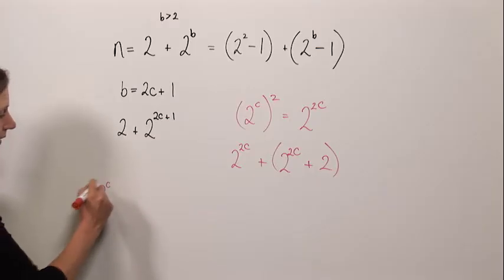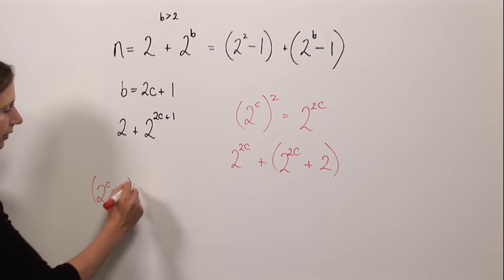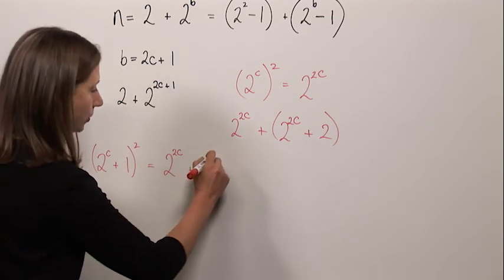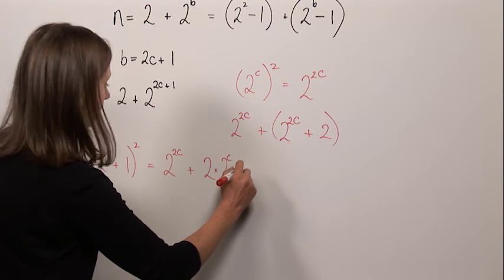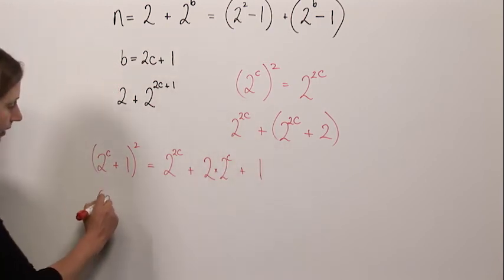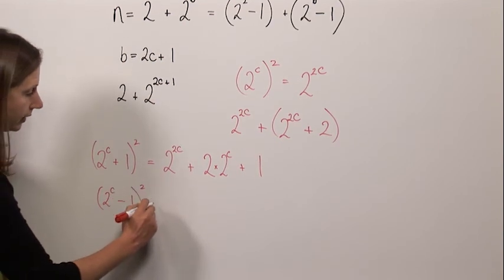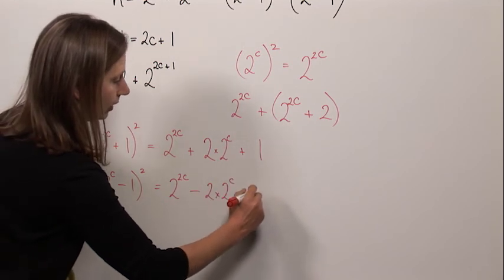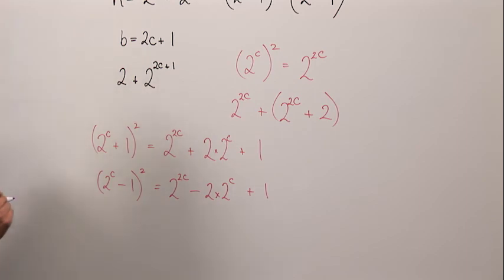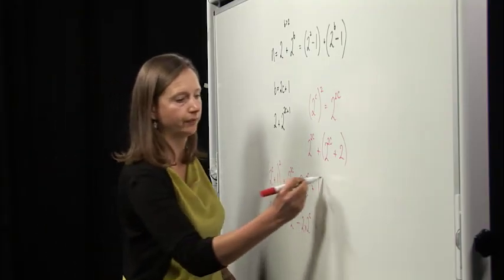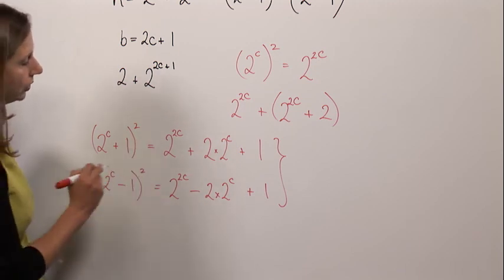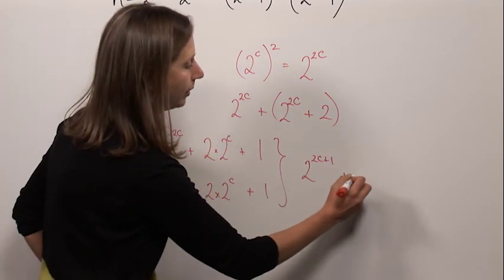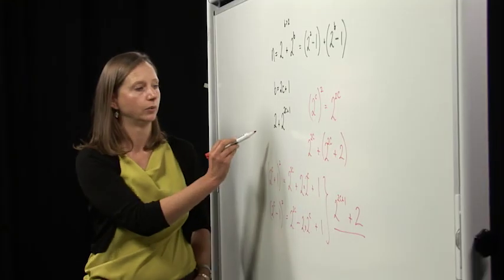So two to the c plus one squared is equal to two to the two c plus two times two to the c plus one, and two to the c minus one squared is equal to two to the two c minus two lots of two to the c plus one. And it just happens that if we add these two things together, we get two lots of two to the two c, which is two to the two c plus one. These cancel out, and we get plus two, which is exactly what we were looking for.